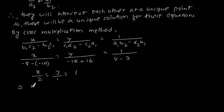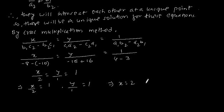This implies x by 2 is equal to 1 and y by 1 is equal to 1, which gives x is equal to 2 and y is equal to 1. Therefore x is equal to 2 and y is equal to 1. Now the third part.